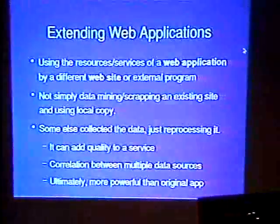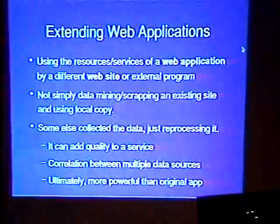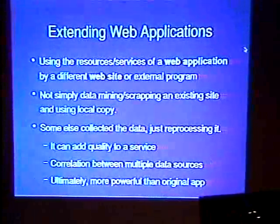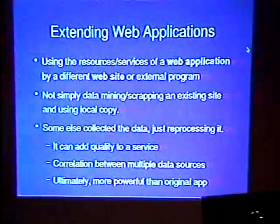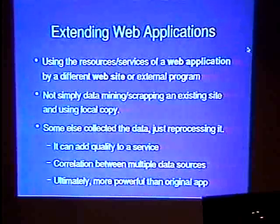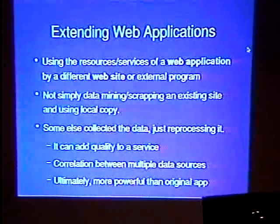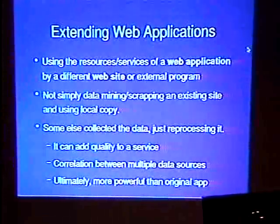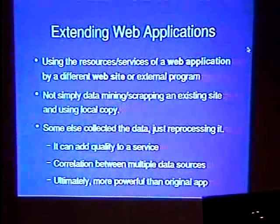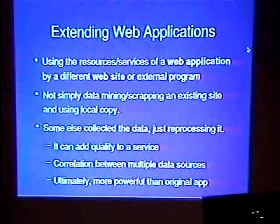Someone else collected the data and we are just reprocessing it. We can add quality to the service, because we can do correlation between multiple data sources. I could go grab information from IMDB, and grab information from the Weather Channel, and find out if it's raining on Kevin Bacon. Ultimately, this is more powerful than the original application — that's the whole point of extending web apps. Maybe their interface is really kludgy and you hate it, like weather.com, and you are adding value.